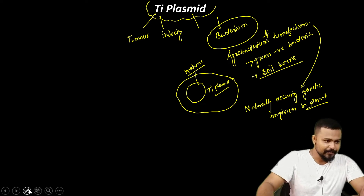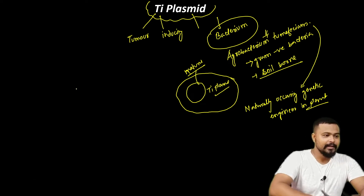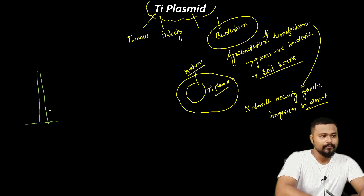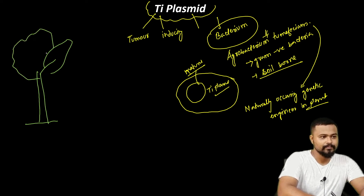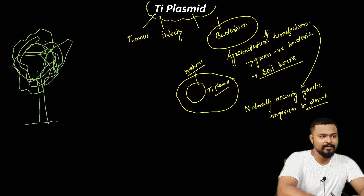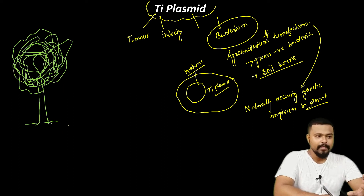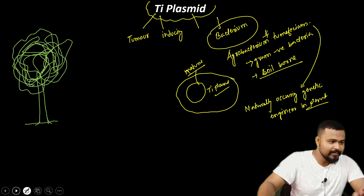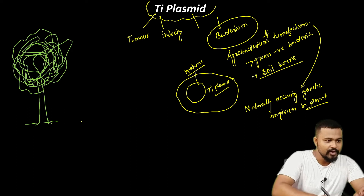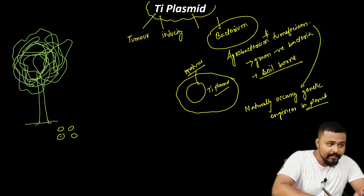Consider a dicot plant and the bacterium Agrobacterium tumefaciens, which is a soil-borne bacterium. When this bacterium encounters a plant, the interaction begins through the Ti Plasmid mechanism.